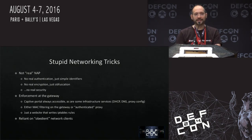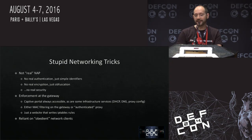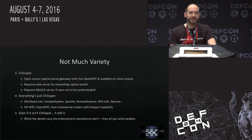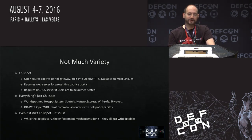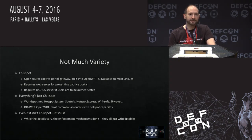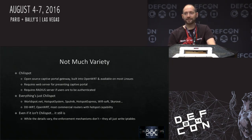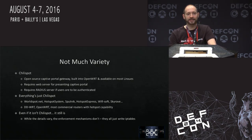They rely on obedient network clients — clients that are going to behave the way network clients normally do. They use either an authenticated proxy or MAC filtering on the gateway, usually MAC filtering on the gateway governed with iptables rules. There's very little variety in these. They may look all different, but there's a piece of open source software called Chilispot. It's built into OpenWRT, available in most Linux package managers. It requires a web server and a RADIUS server if you want to authenticate users. Basically everything is just Chilispot — Worldspot.net, Hotspot Systems, Sputnik, Hotspot Express, WiFiSoft, Skyrove — they're all just Chilispot. If they're not Chilispot, they're for all intents and purposes a Chilispot clone. Even if it isn't Chilispot, it basically still is — it's still a website writing iptables rules.